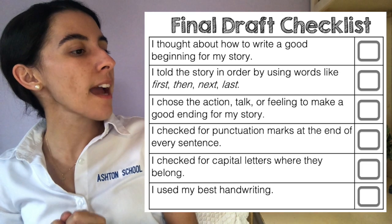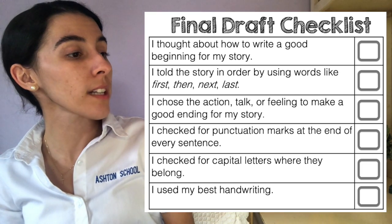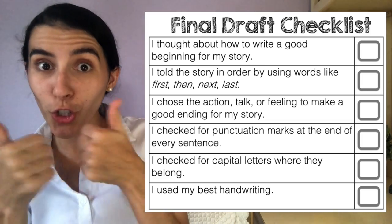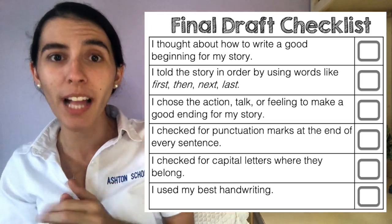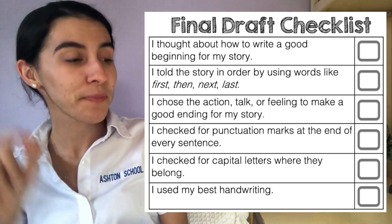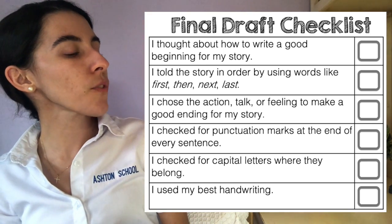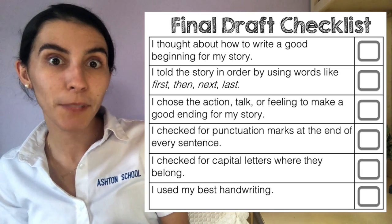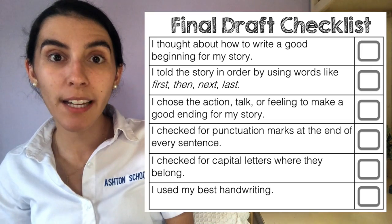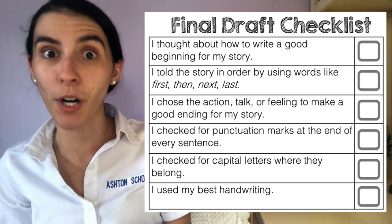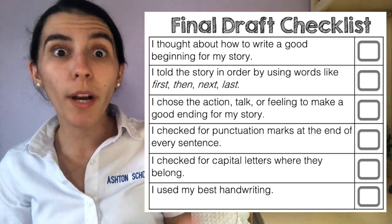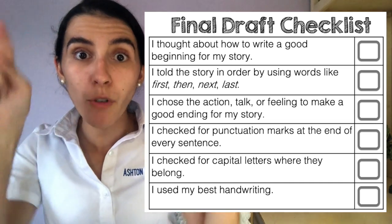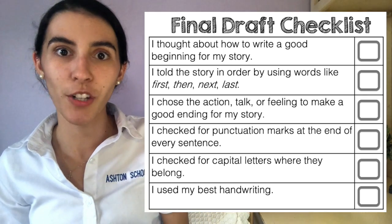I chose the action, talk, or feeling to make a good ending for my story. So does your story have a good, strong, and powerful ending? Check. I checked for punctuation marks at the end of every sentence — go back and check. Make sure that there is a period, an exclamation mark, or a question mark. Or if you had people talking in your story, make sure that you have quotation marks to show that they are talking.